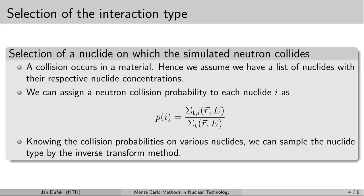The probability that a neutron collides on a specific nuclide can be calculated as the ratio of the total macroscopic cross-section for that nuclide to the total macroscopic cross-section for the material. We calculate this probability for every nuclide present in the material. Once we know all these probabilities, we can easily use the inverse transform method to sample the type of nuclide on which the collision takes place.